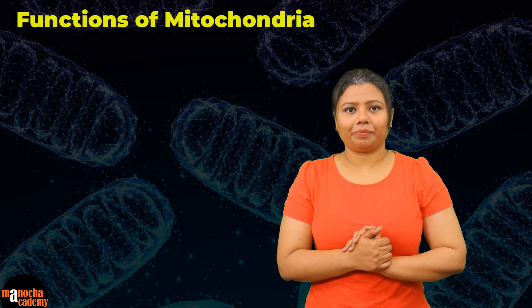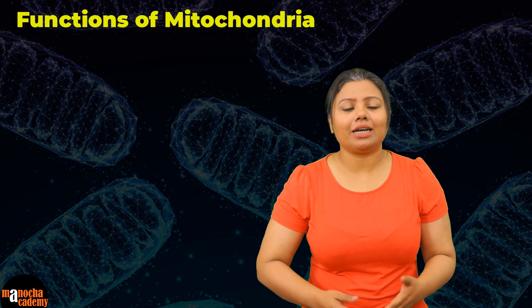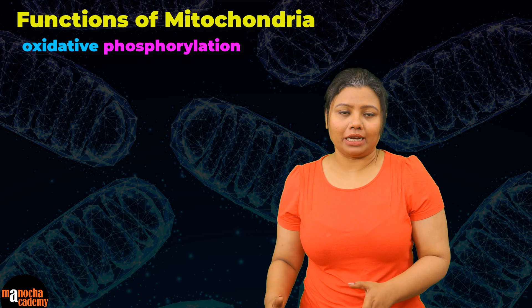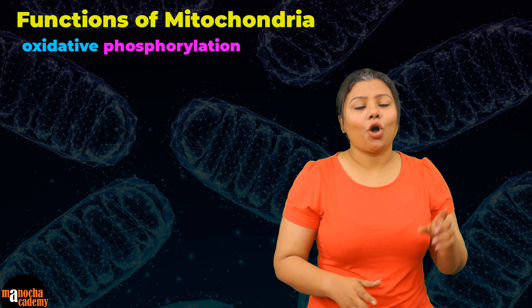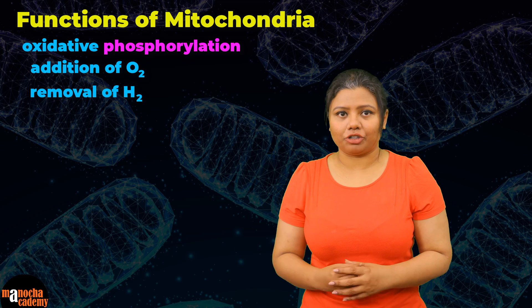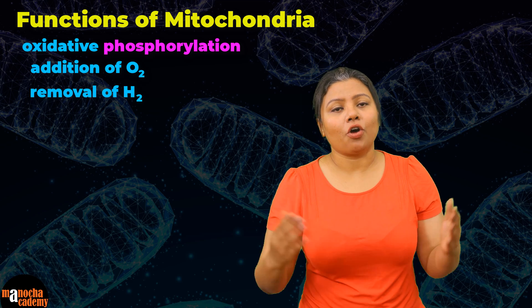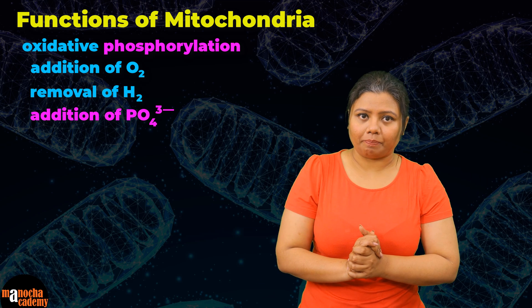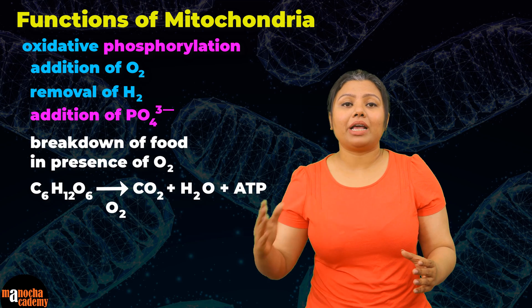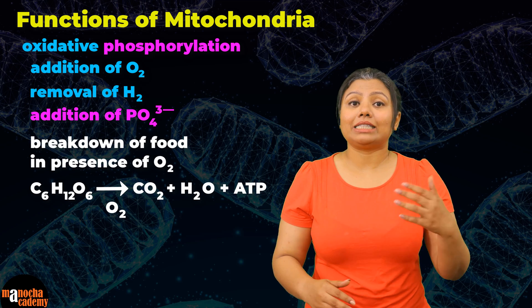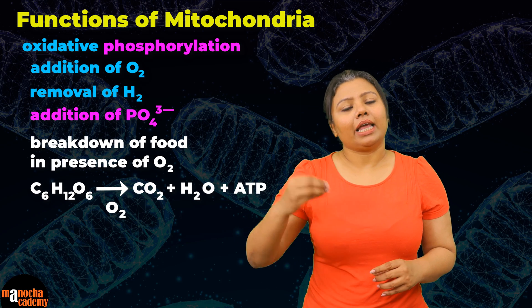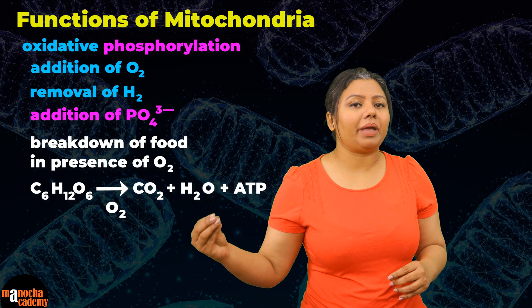What are the functions of mitochondria? Mitochondria is essentially a cell organelle responsible for oxidative phosphorylation. Oxidation is either addition of oxygen or removal of hydrogen, and phosphorylation is the process of addition of phosphate. So the main function of mitochondria is to break down food in the presence of oxygen by oxidizing it, and with the help of energy liberated during this process, ATP is synthesized from ADP and Pi.